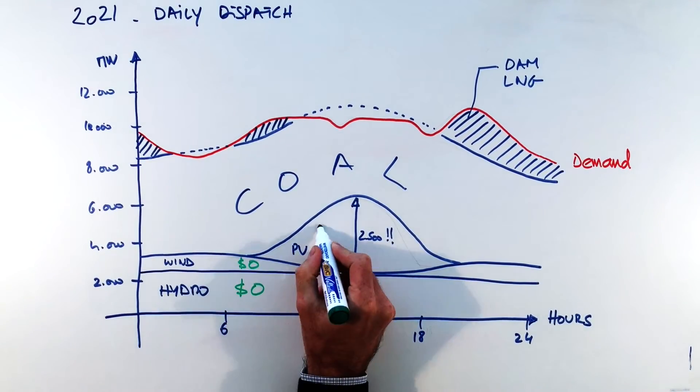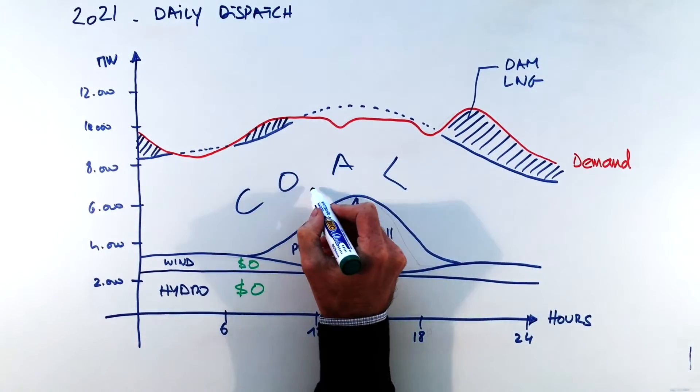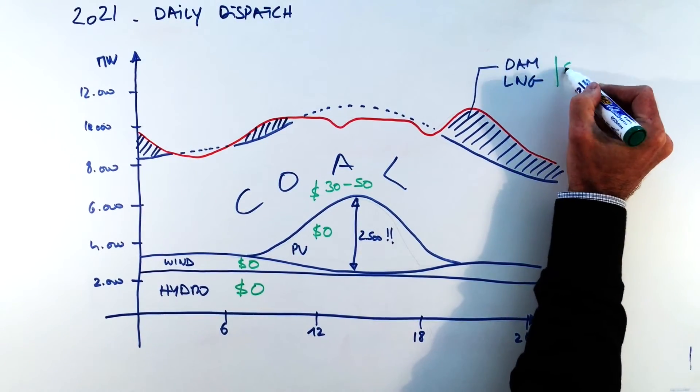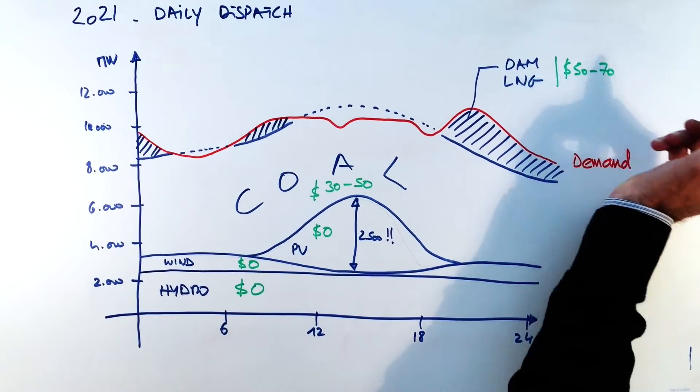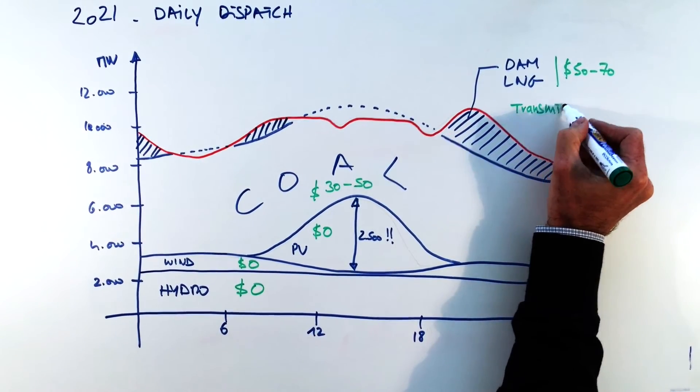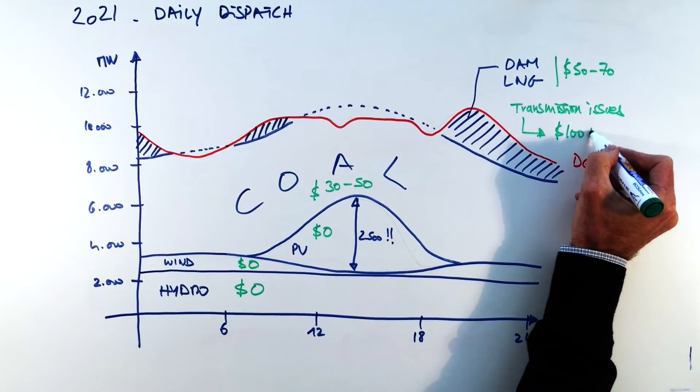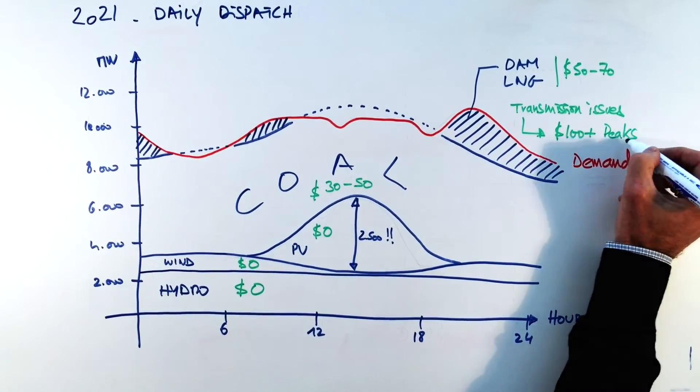So if we look at costs, all our renewable bases are at zero, coal again is expected to be between 30 and 50 dollars per megawatt hour and our peaks are going to be between 50 and 70 depending on the fuel prices and depending on transmission issues. In some areas of the system we can still see 100 dollars and plus in peaks.